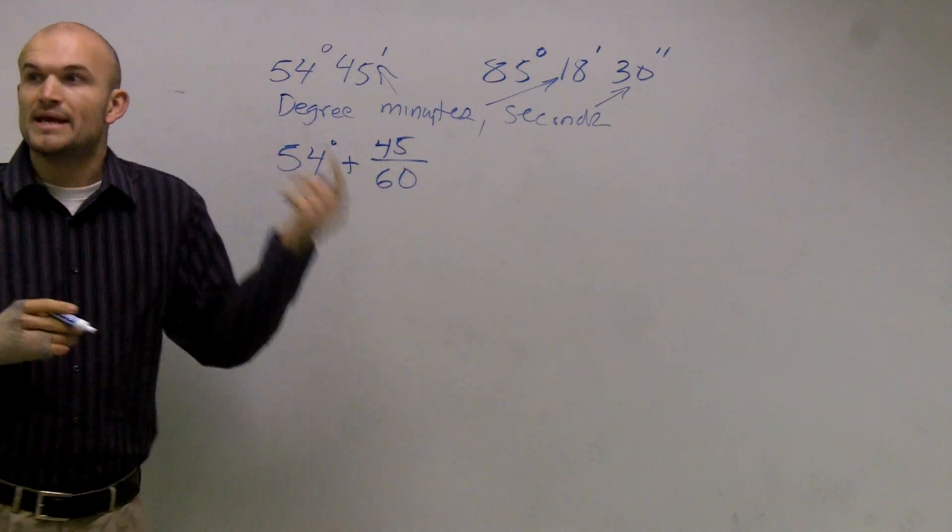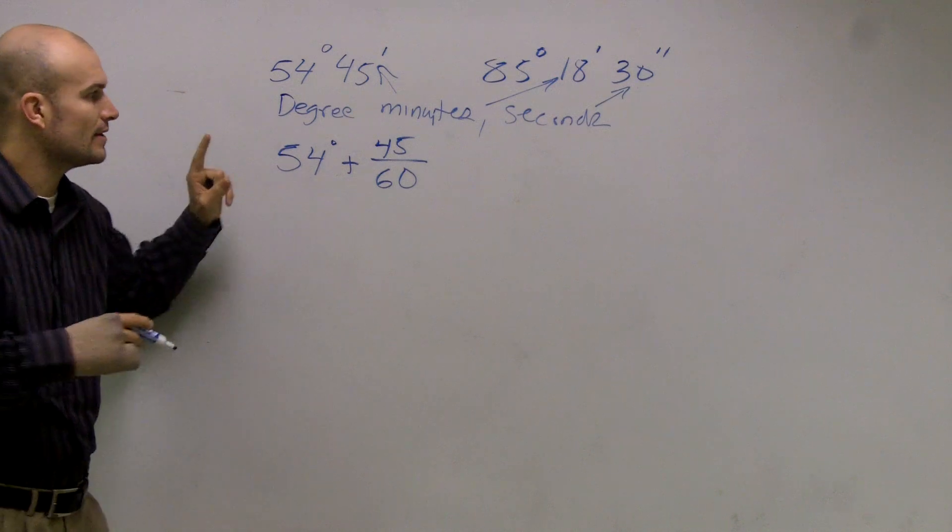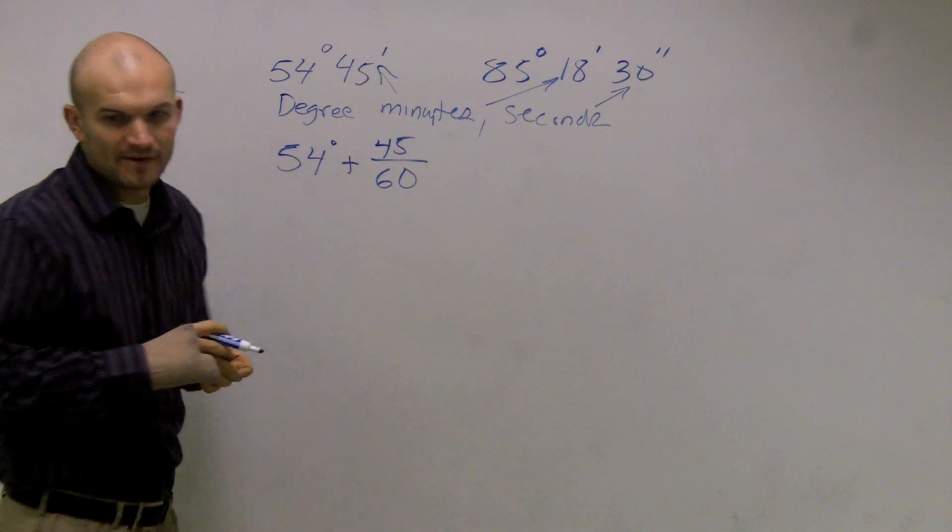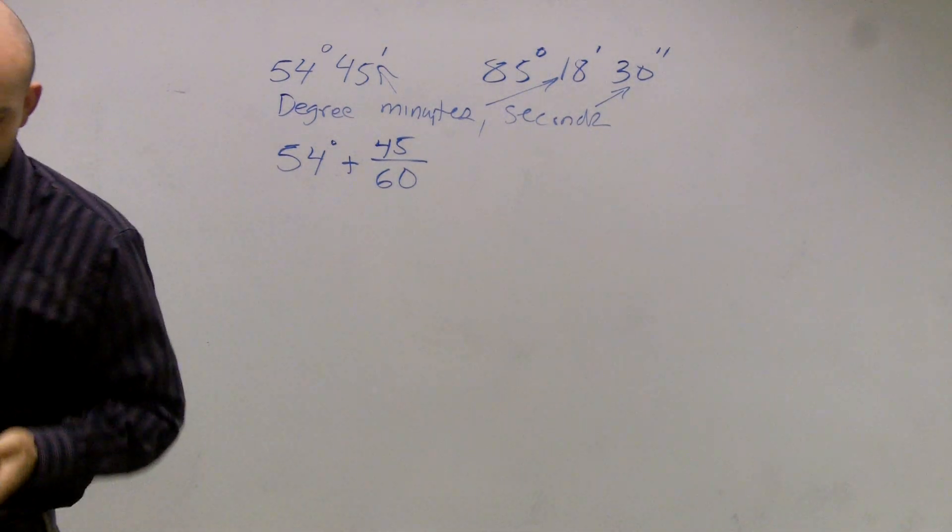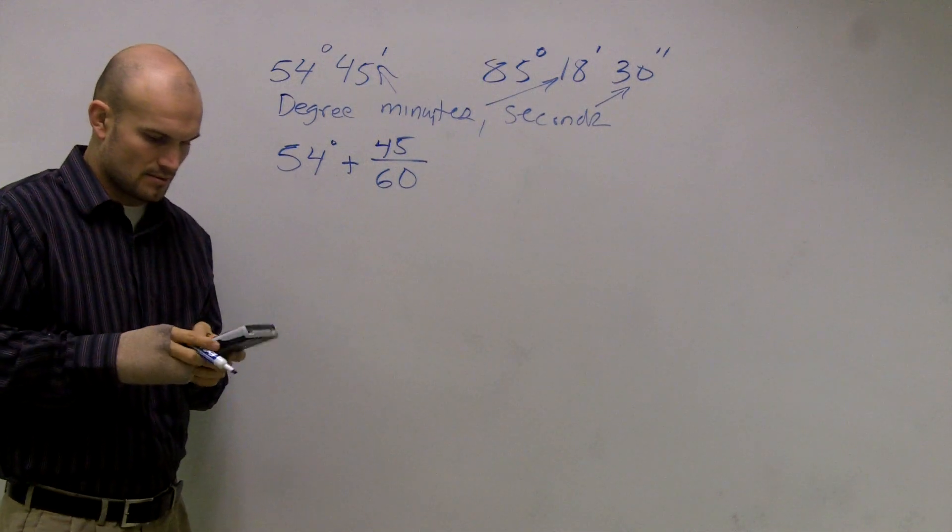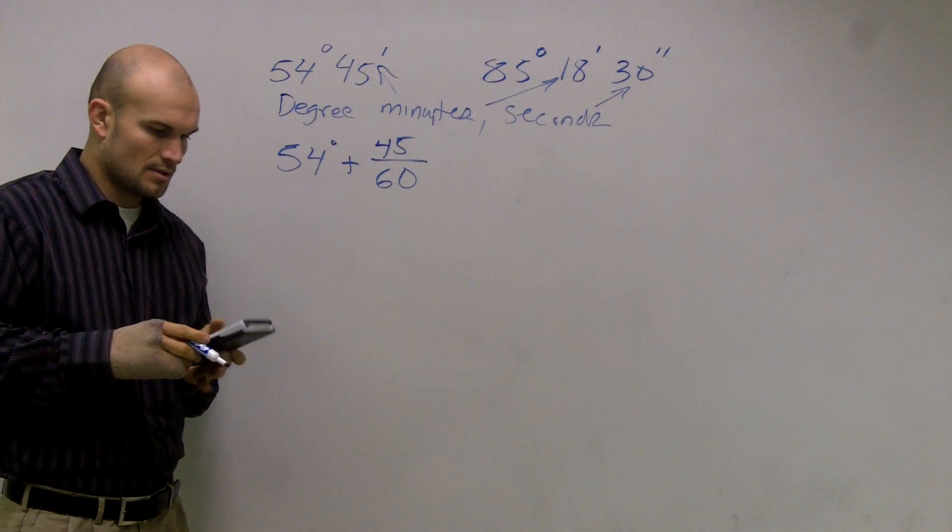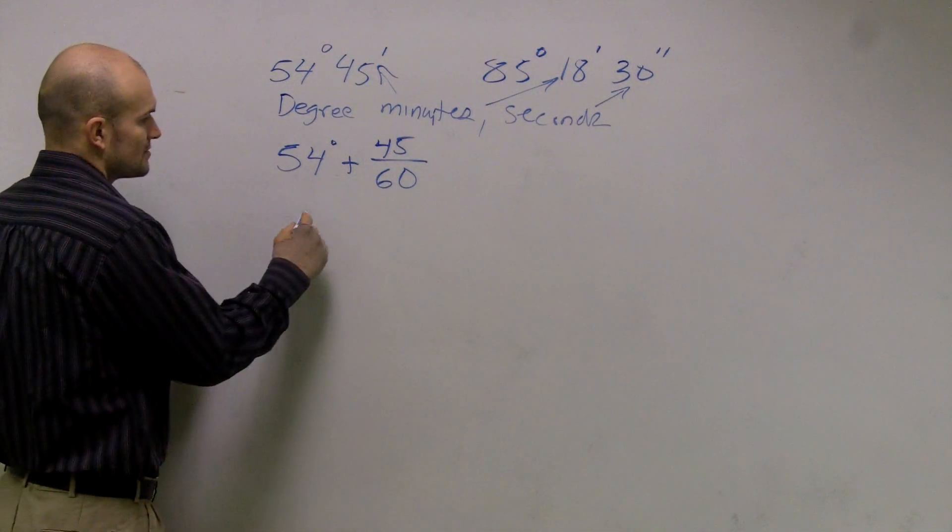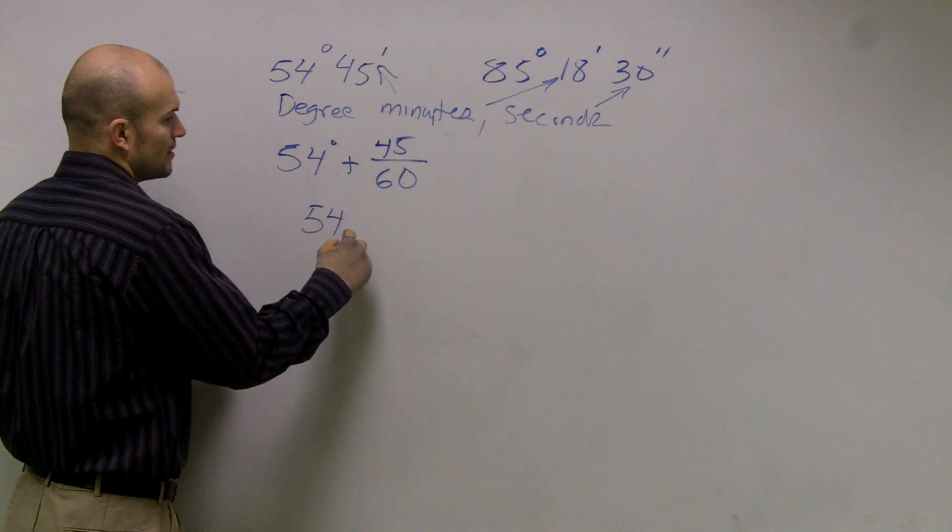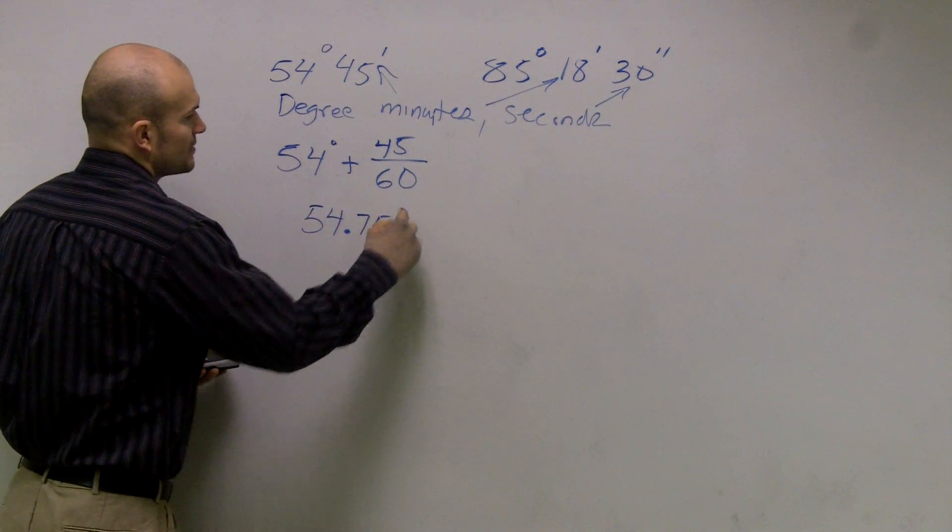Because 60 minutes will make up one hour. So I find out my 45 divided by 60, which is 0.75. So this is 54.75 degrees.